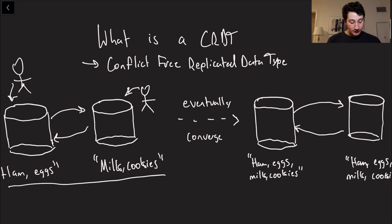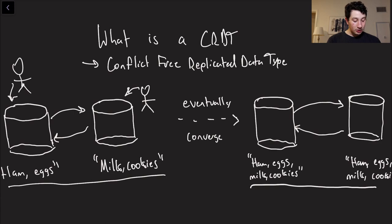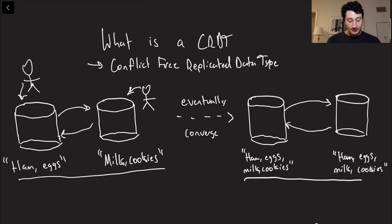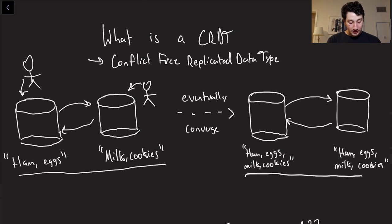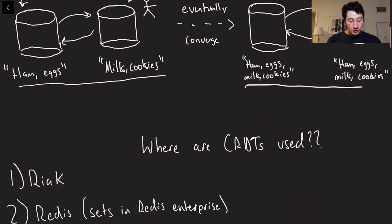So ideally, what we would want is eventually both of those leaders are going to agree that ham, eggs, milk, and cookies are what's actually in the set. That is the ideal scenario here. So how can we actually go about doing this?